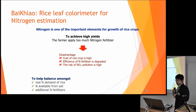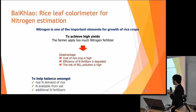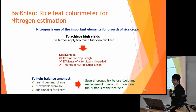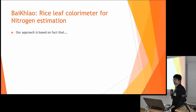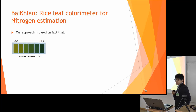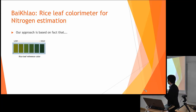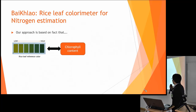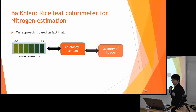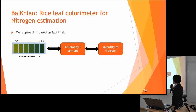To help balance among these factors, the real nitrogen demand of the rice, the nitrogen available from the soil, and the additional nitrogen fertilizer need to be calculated and estimated. Our approach is based on the fact that the rice leaf has a reference color. We can estimate the nitrogen from the leaf color because the greenness of the rice leaf is dependent on the chlorophyll content in the leaf, and the chlorophyll content can be referred to the quantity of nitrogen.